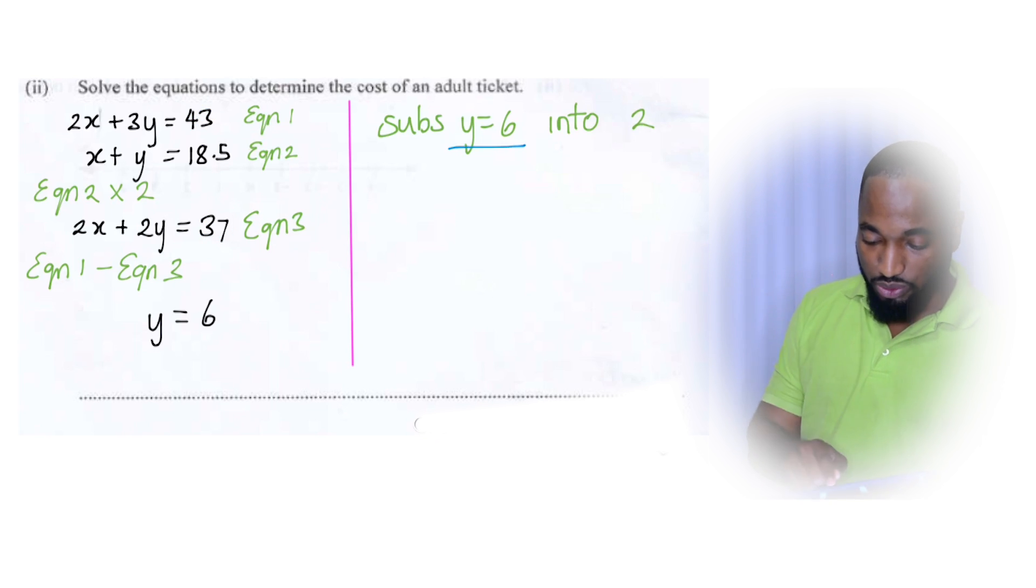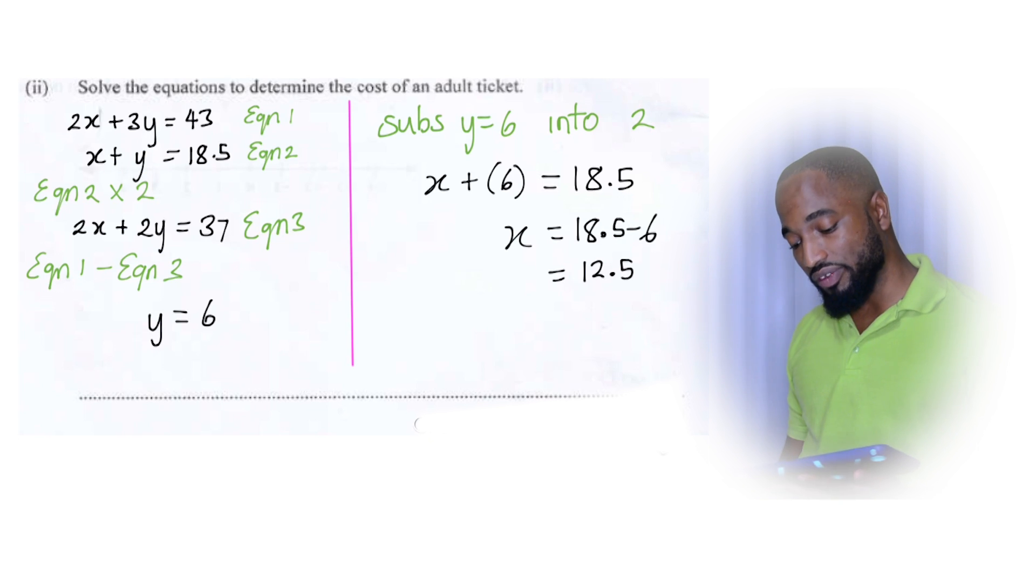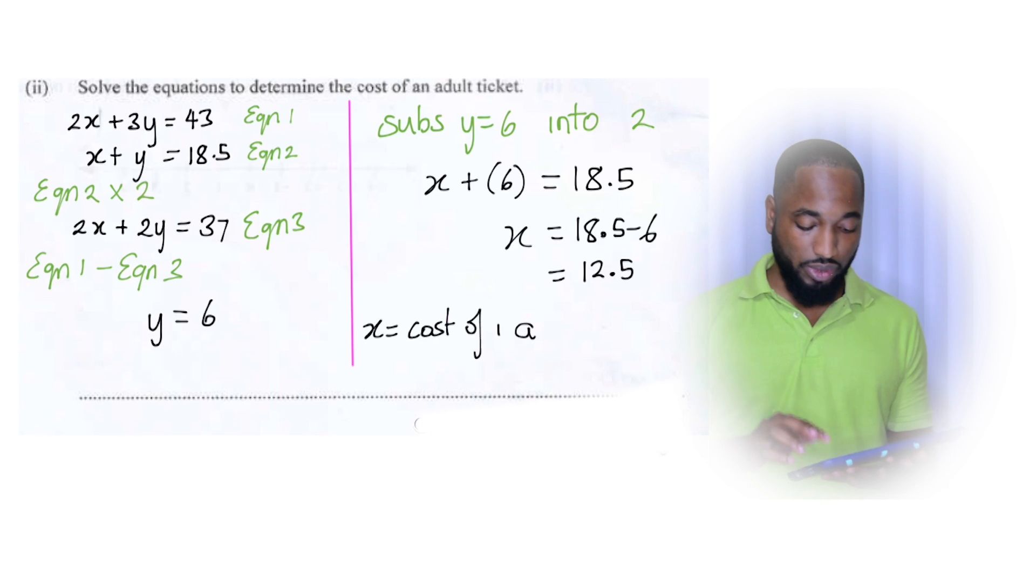Substitute Y equals six which we just found into one of the equations. I should have put equation two here. Equation two. No space the full line. Just use the imagination. So X plus six equals 18.5. You understand? We take this six and we substitute it right there in that equation. And now X is equal to 18.5 take away six. X is equal to 12.5. Easy like that. Solve it. All of these equations should work out simple like that and it should be with two marks.